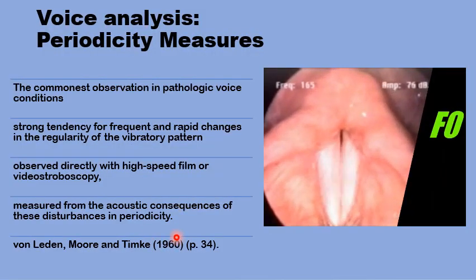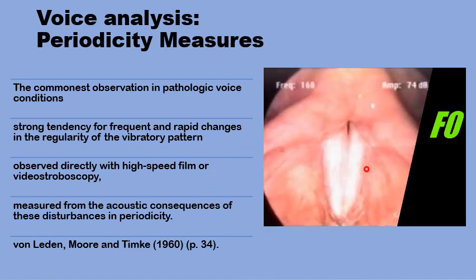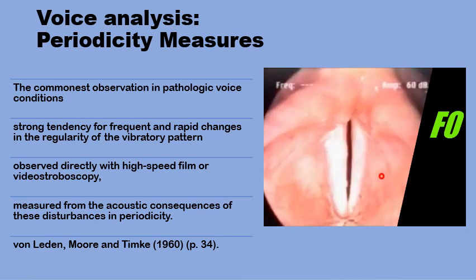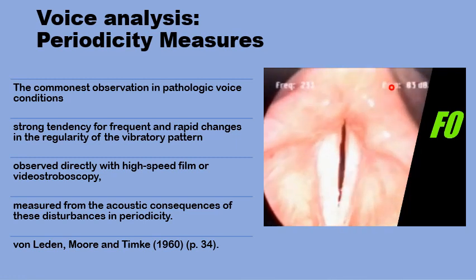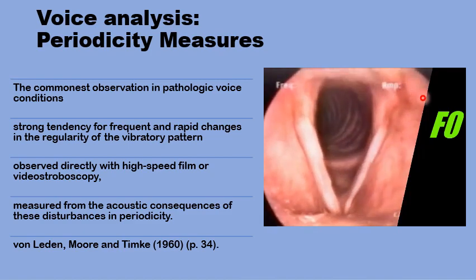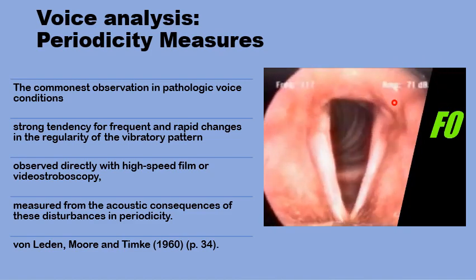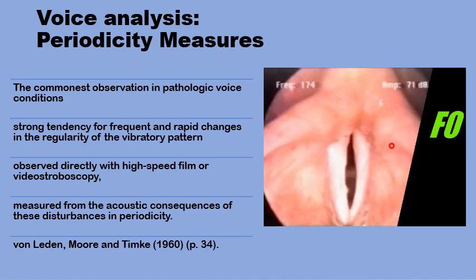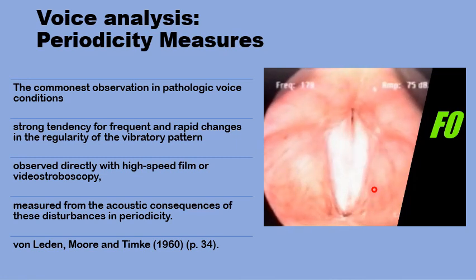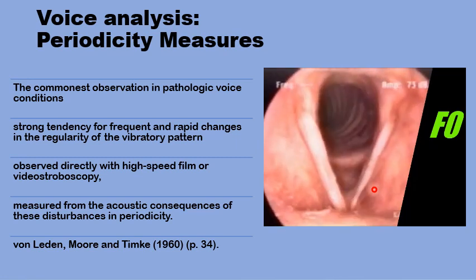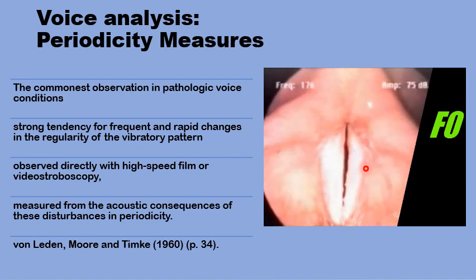For decades it has been observed that the commonest finding in pathological voice conditions is a strong tendency for frequent and rapid changes in the vibratory cycle frequency and amplitude. The changes in the consecutive or adjacent cycles' amplitude are called shimmer, and these can be observed directly using video stroboscopy or high-speed video films. The acoustic consequences of these irregularities can also be recorded and analyzed.